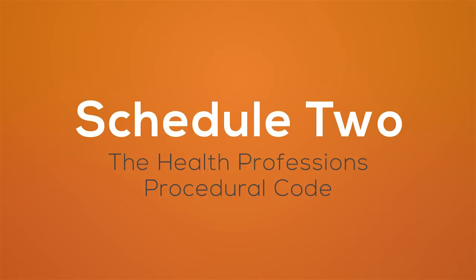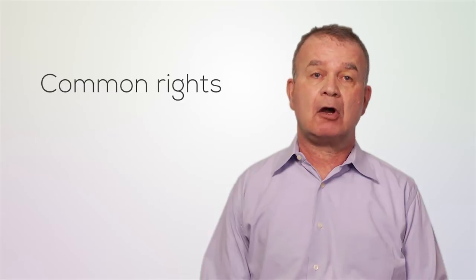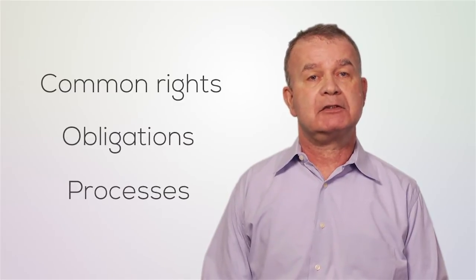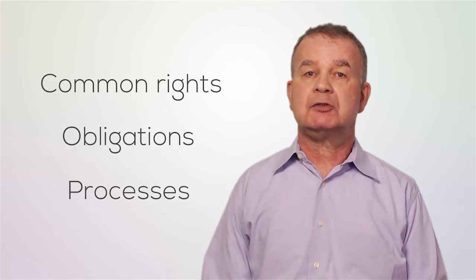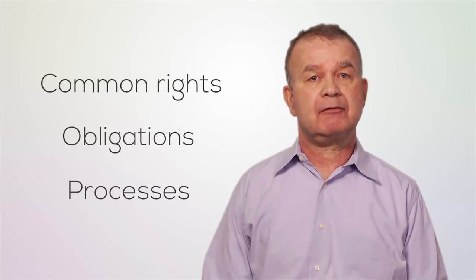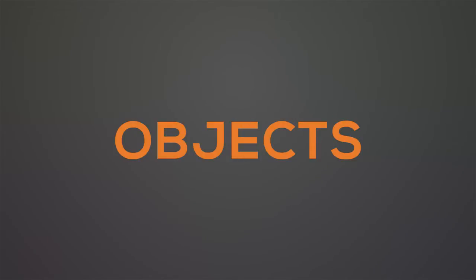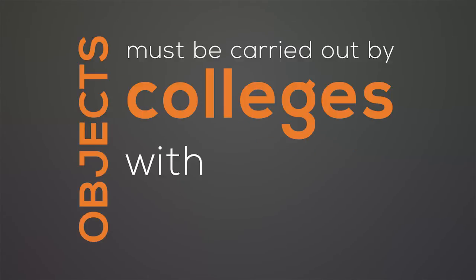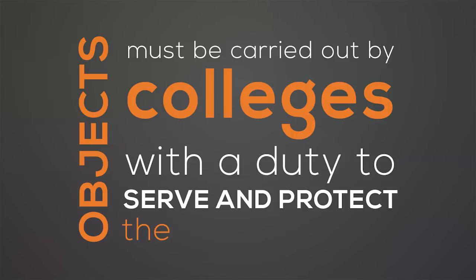Schedule 2, the Health Professions Procedural Code, is perhaps the single most important component of the RHPA model. It lays out the common rights, obligations, and processes that govern all the professions equally. This is accomplished through the Deeming Provision, which makes the Code a part of every profession-specific act. The Code also sets out the common objects, or goals, for all regulated health profession colleges, and an important part of those objects is that they must be carried out with a duty to serve and protect the public interest.